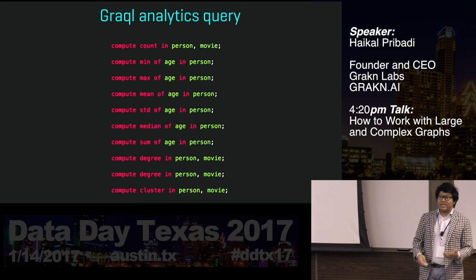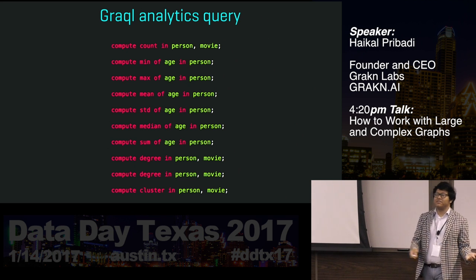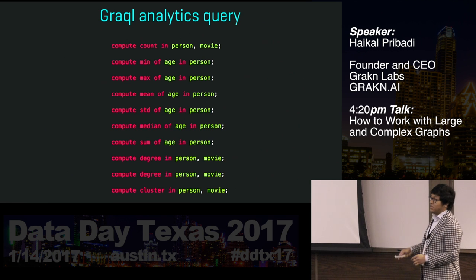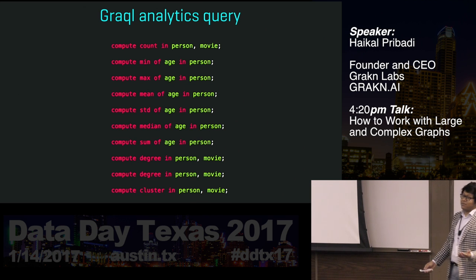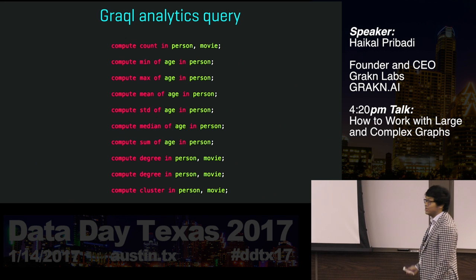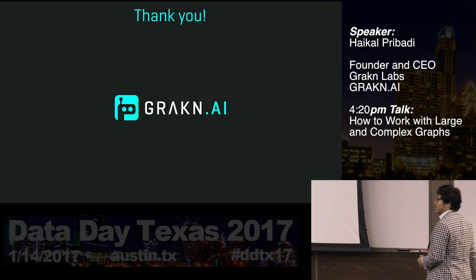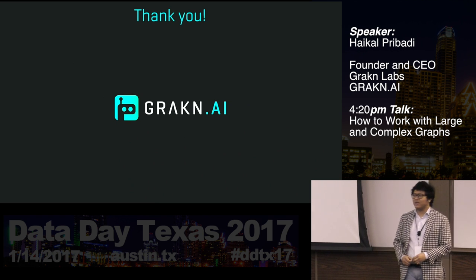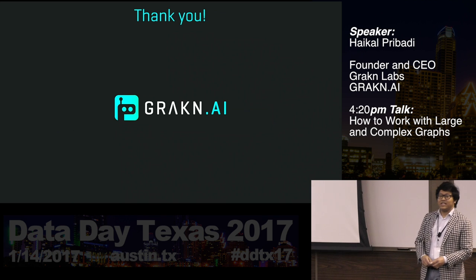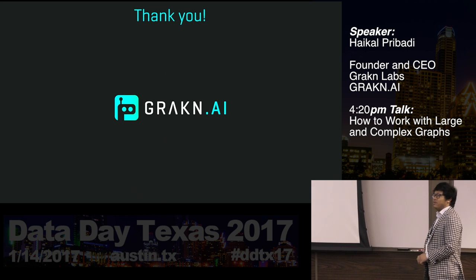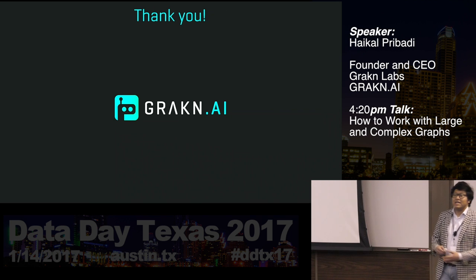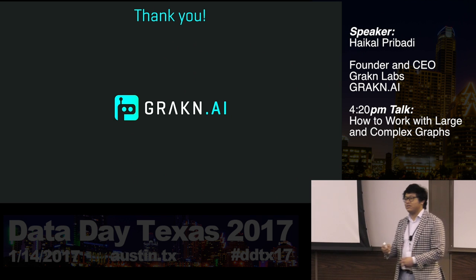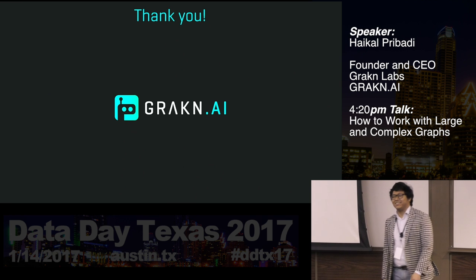We basically created graph analytics as a language as part of the knowledge graph. Everything before this page is OLTP; everything on this page is OLAP. It still takes the same amount of time to run an OLAP algorithm, but the difference is that to experiment with anything, it takes one line of code instead of having to think about how to implement a Pregel algorithm. And that's how we think we can help you work with complex datasets: making it a lot easier to model, to add your business rules, to query without worrying about interpretation, and to analyze with just one line of code. And that's Graken AI. Thank you.